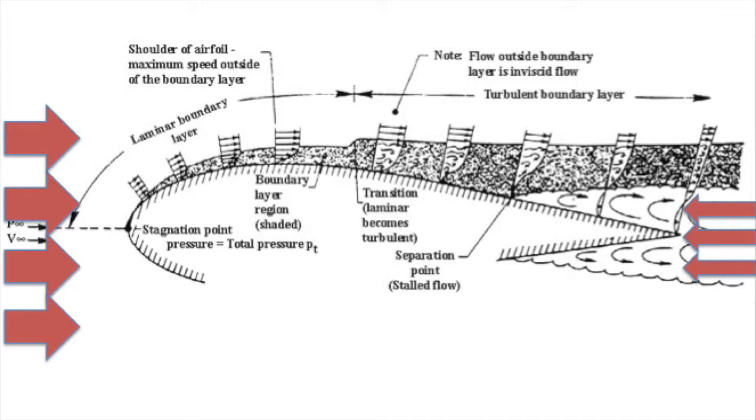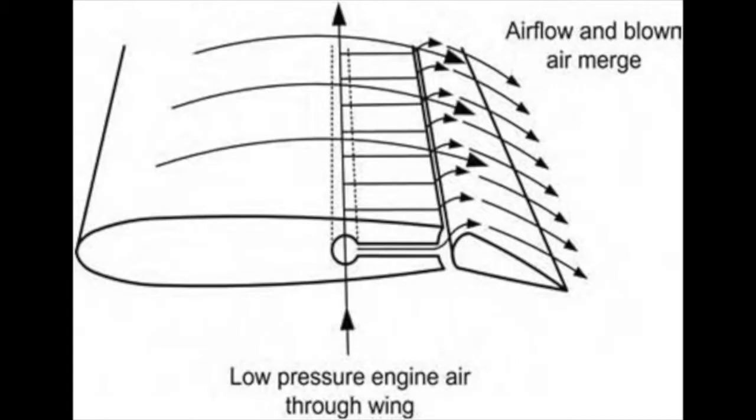The earlier this separation happens, the more drag the surface and hence the body experiences. Hence, the delay of such separation is ideal. And that's what I'm trying to look at with my project. Any reinjection of the flow into an already turbulent layer could delay separation by changing the velocity profile of the flow at the surface.